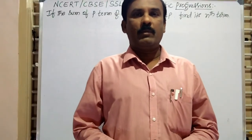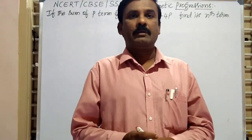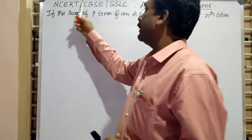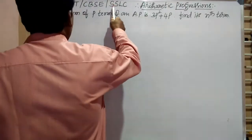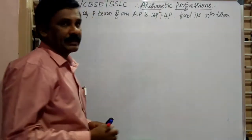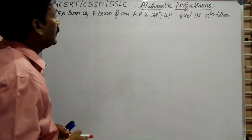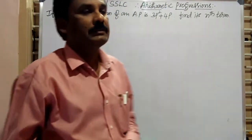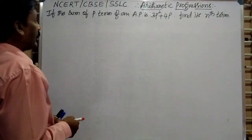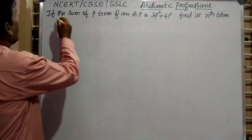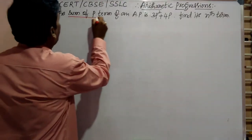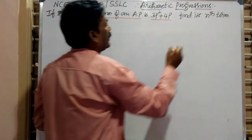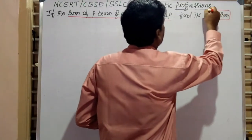Hi everyone, I am Malatesh. In this video, I am going to discuss about the NCERT and CBSE SSLC mathematics, arithmetic progressions chapter, application level questions. Here, one application level question is like this: if the sum of p terms of an arithmetic progression is 3p squared plus 4p, find its nth term.